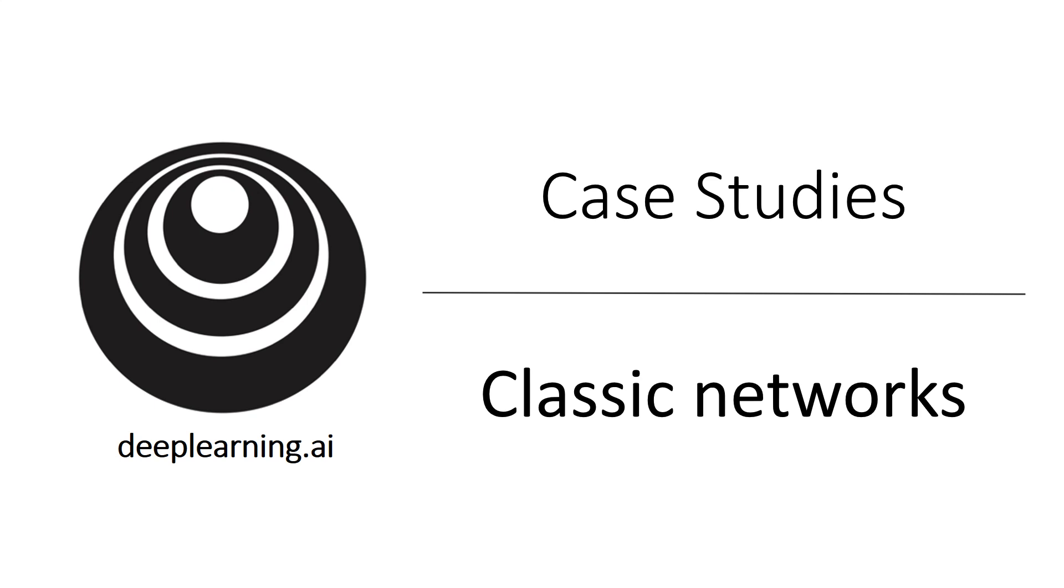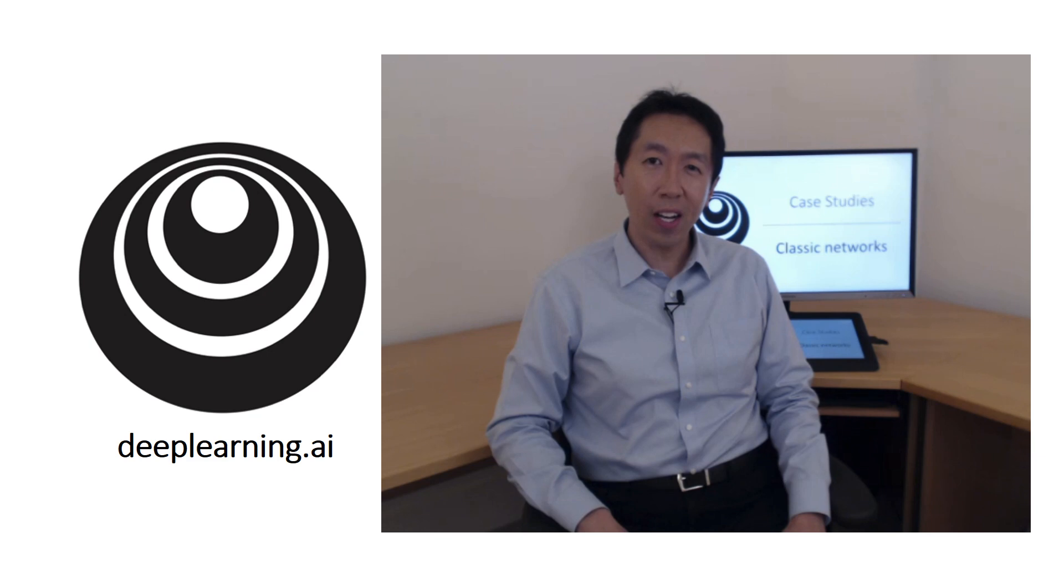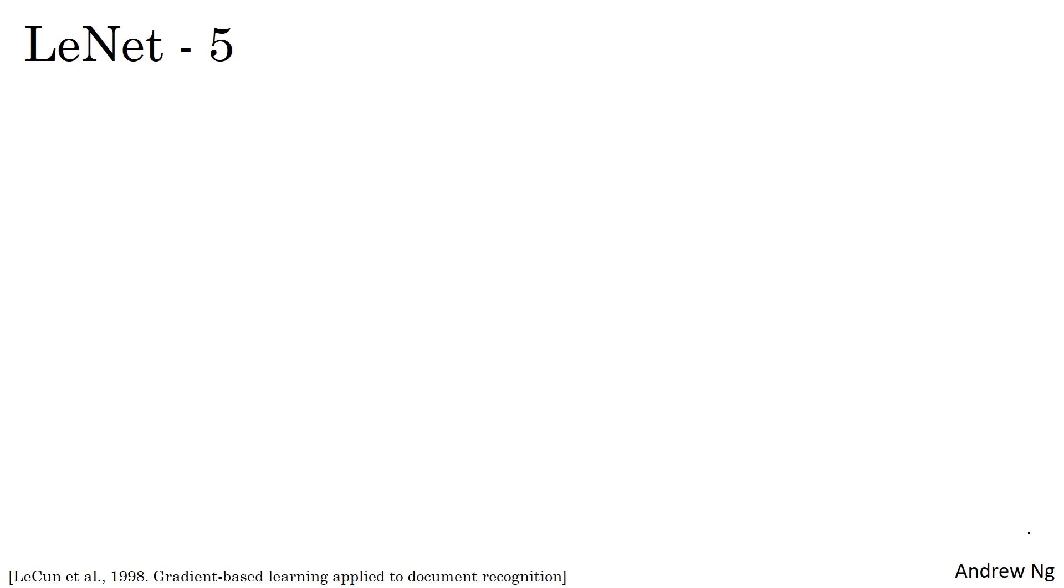In this video, you learn about some of the classic neural network architectures. Start with LeNet-5, then AlexNet, and then VGGNet. Here's the LeNet-5 architecture. You start with an image which is 32 by 32 by 1, and the goal of LeNet-5 was to recognize handwritten digits. LeNet-5 was trained on grayscale images, which is why it's 32 by 32 by 1.